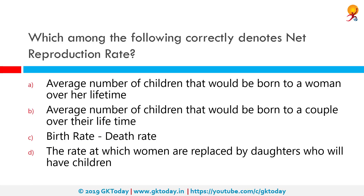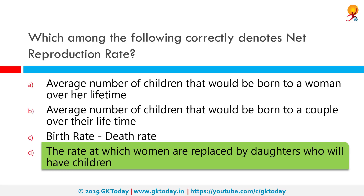Which among the following correctly denotes net reproduction rate? The correct answer is option D, which states the rate at which women are replaced by daughters who will have children. To elaborate, the net reproduction rate is the average number of daughters that would be born to a female if she passed through a lifetime conforming to the age-specific fertility and mortality rates of a given year.